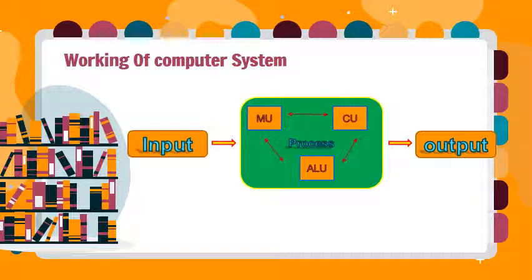Block diagram means internal view. Look at the diagram. With the help of input devices, we give instructions to the CPU. CPU basically decides what sort of instruction it is. With the help of the control unit, it passes the instruction to two main units of the CPU. If the problem is mathematical or logical, it will pass the problem to the arithmetic and logic unit. But if we need to store anything, it will pass the instruction to the memory unit. And then, with the help of output devices, we can see the results on our screen.